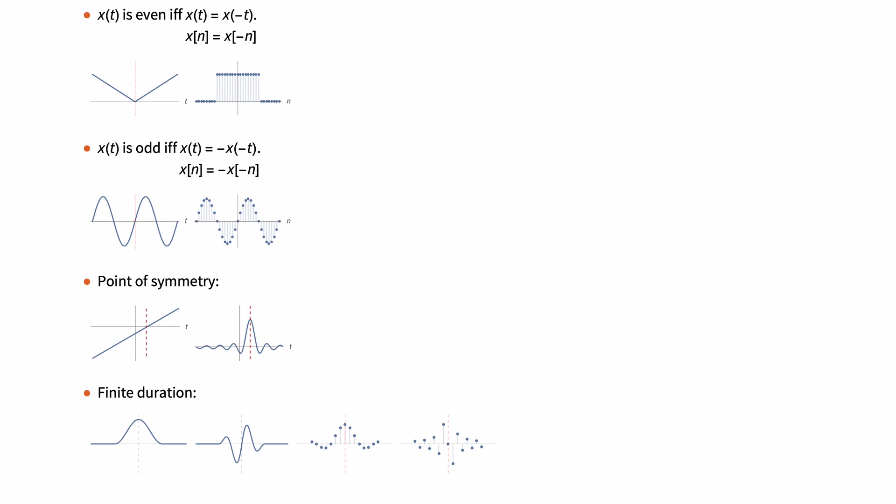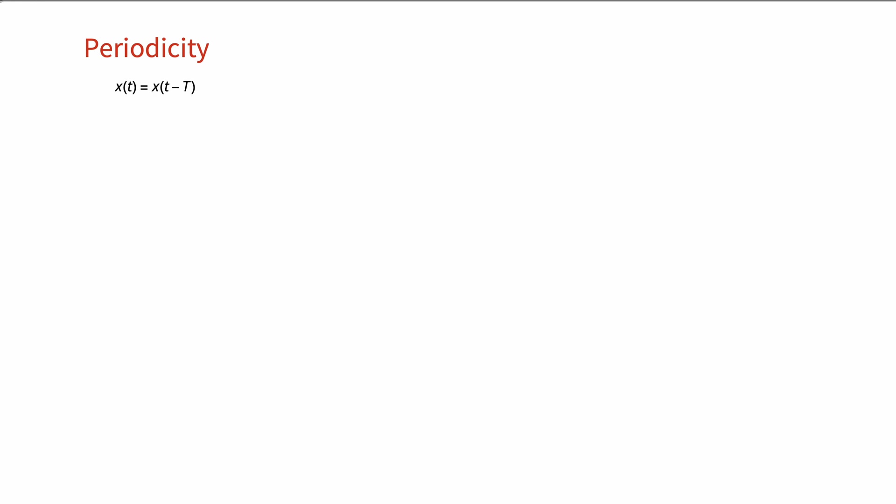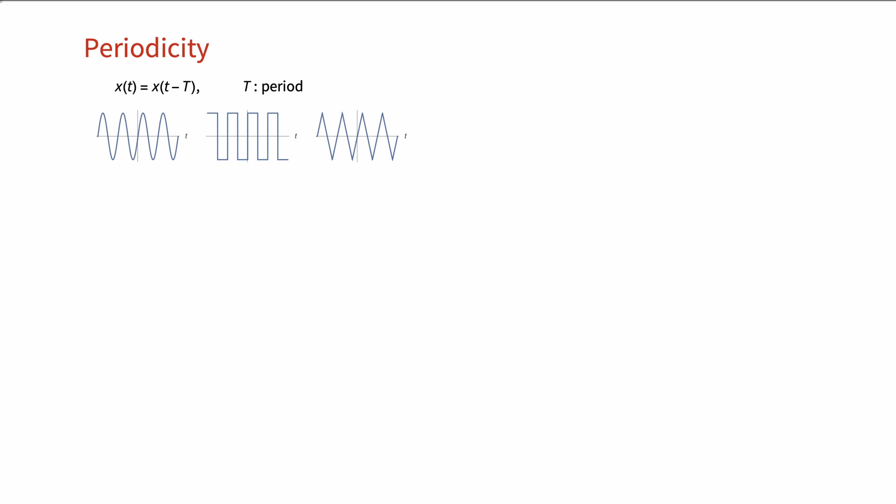Note that the point of symmetry doesn't have to be at 0 — it could be non-zero, as you see in these examples. The property of symmetry is also defined for finite duration signals and sequences; they could be symmetric across the center point of the region of support. A signal is said to be periodic if there exists a value T such that x(t) equals x(t minus T). The smallest such value is called the period of the signal. Similarly for discrete time sequences, where the period is denoted by N. It is clear that for a signal or sequence to be periodic, it must be of infinite duration.